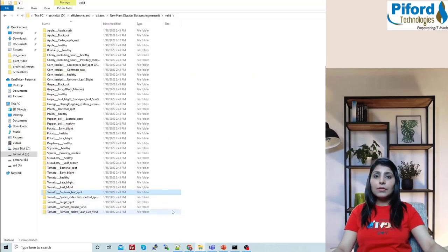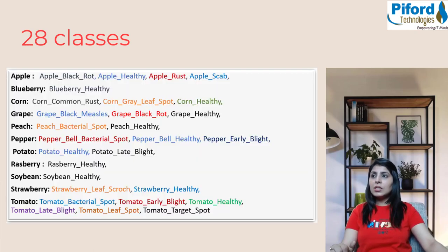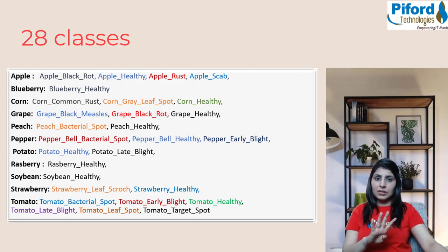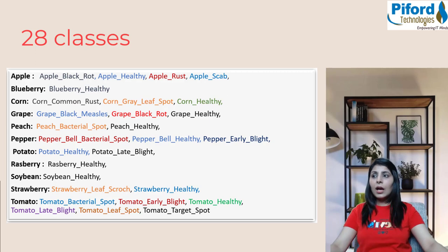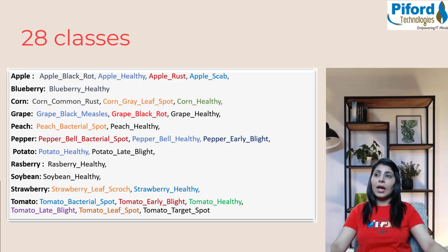There are around 54,000 images belonging to all 38 different classes, which is a very huge dataset. So I'm not working on all the images or all 38 classes — I'm working on 28 classes. Under Apple category we have Apple Black Rot, Apple Healthy, Apple Rust, and Apple Scab. Under Blueberry we have Blueberry Healthy. Under Corn: Corn Common Rust, Corn Gray Leaf Spot, and Corn Healthy. In total, there are 28 classes I'm working on.